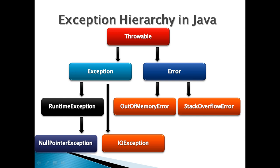Exception class represents something that happens not as a result of a programming error, but rather because some resource or input is not available, or some condition required for correct execution is not present. Error class represents unusual situations that are not caused by program errors, or anything that would normally happen during program execution. Some examples would be JVM running out of memory. Generally your program won't be able to recover from an error, so you're not required to handle them.